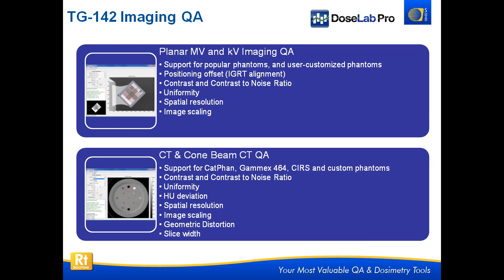We also have a full imaging QA suite. In addition to all your machine QA, you get all of your OBI or KV QA, Conebeam CT, and MVCT — we're compatible with all of those. For our planar MV and KV imaging QA, we support a lot of popular phantoms. SunNuclear has their own phantoms, and we also support standard imaging phantoms, the phantoms that come with your machine, the Leitz phantom, the Las Vegas phantom. You can even add your own if what we have is not in the list.